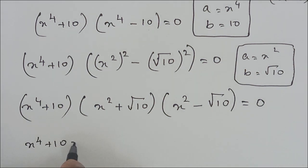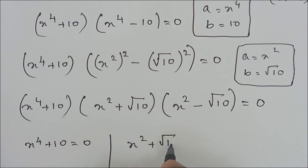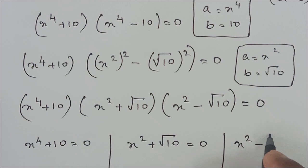We can equate each factor to zero: x^4 + 10 = 0, x^2 + √10 = 0, and x^2 - √10 = 0.